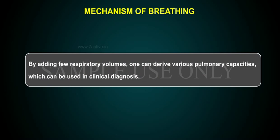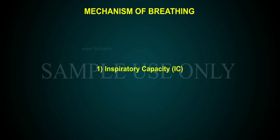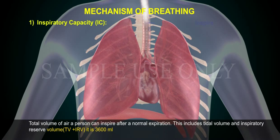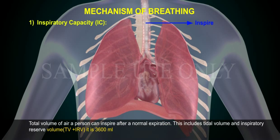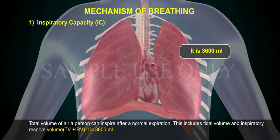By adding a few respiratory volumes, one can derive various pulmonary capacities, which can be used in clinical diagnosis. 1. Inspiratory capacity (IC): Total volume of air a person can inspire after a normal expiration. This includes tidal volume and inspiratory reserve volume (TV plus IRV). It is 3,600 ml.